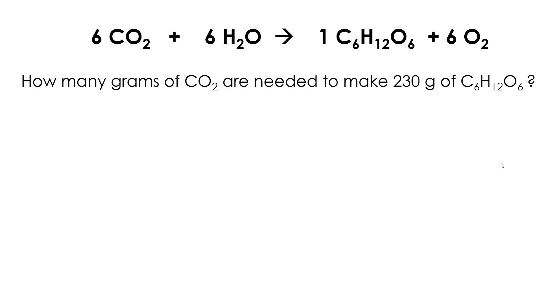I don't expect you to be able to do this just from that description — I want to show you in a lot of detail exactly what these steps are. So first, you have a chemical equation, and it asks you how many grams of carbon dioxide you need to make 230 grams of glucose.